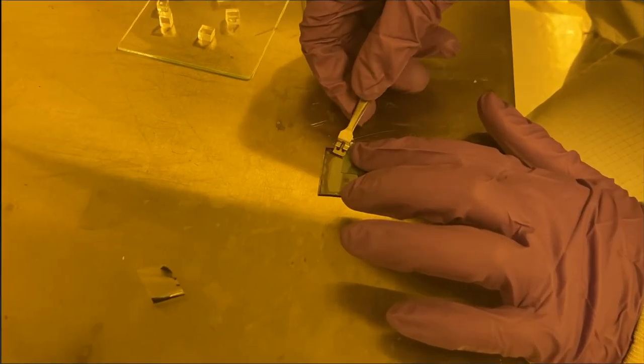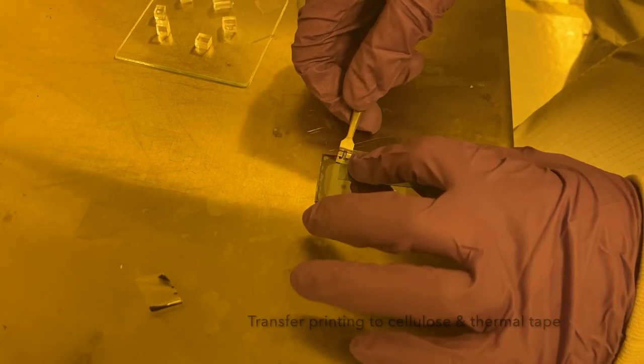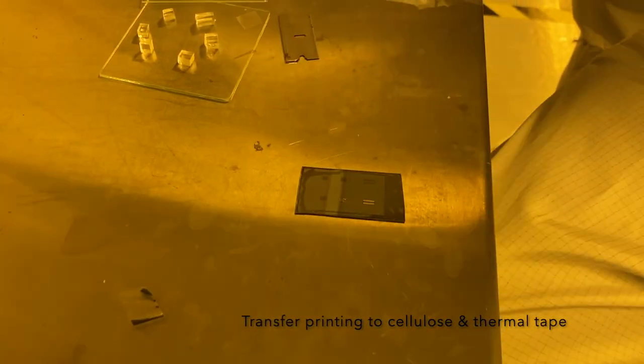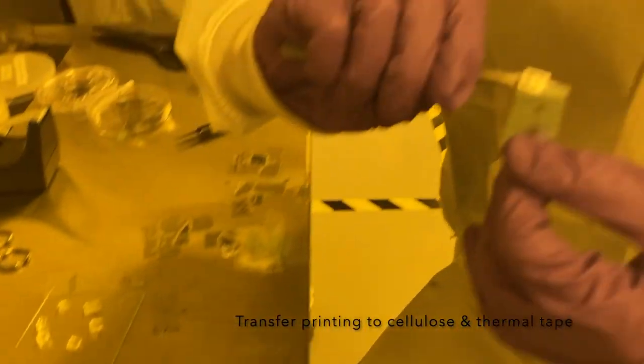Then, we carefully grasp an exposed corner of the tape with tweezers and pull it off of the silicon wafer with one swift stroke.